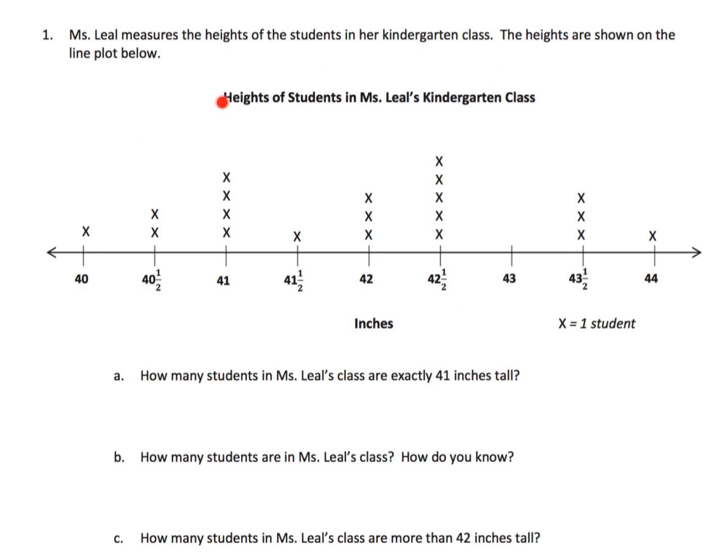So parents and teachers, we want our students to just take a moment and read the title. Okay, height of students in Mrs. Leal's kindergarten class. We want them to see the label down here - oh these are in inches, these are not pounds, these are not in meters or centimeters, these are in inches. And then we can see that each X represents one student, because in previous videos we knew that each little symbol might represent two or four or ten students. So it's important to recognize that each X in this case represents one student.